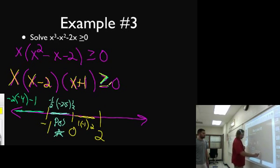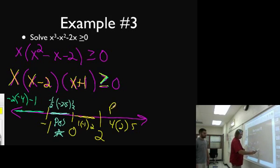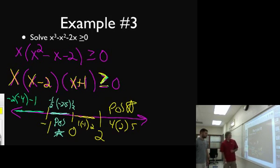So let's pick a number down here. Four. We've got four times four minus two is two times five. Positive times a positive times a positive is a positive. A winner. That's what we want, bigger than or equal to zero. So our answers are going to be negative one, zero, two.